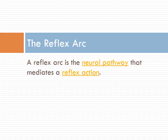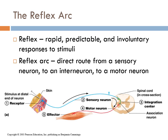Neurons send those signals really fast, and one of the ways we can measure that is by looking at a reflex arc. A reflex arc is a neural pathway that mediates a reflex action. A reflex is a rapid, predictable, and involuntary response to stimuli. A reflex arc is a direct route from a sensory neuron to an interneuron to a motor neuron. Here we have a receptor — neurons in the skin that sense a pin stuck into the skin — sending information down the sensory neuron. When it gets to the spinal cord, the sensory neuron sends the signal to the interneuron, which interprets the signal, then makes a decision and sends that information down a motor neuron to an effector.